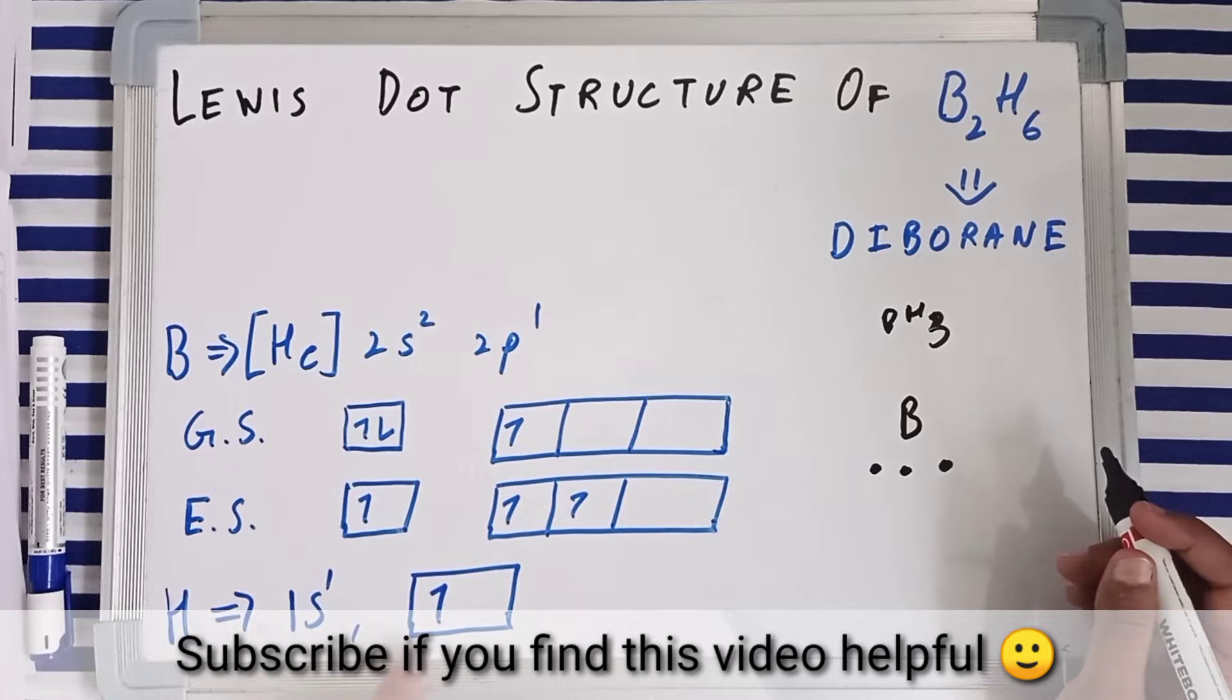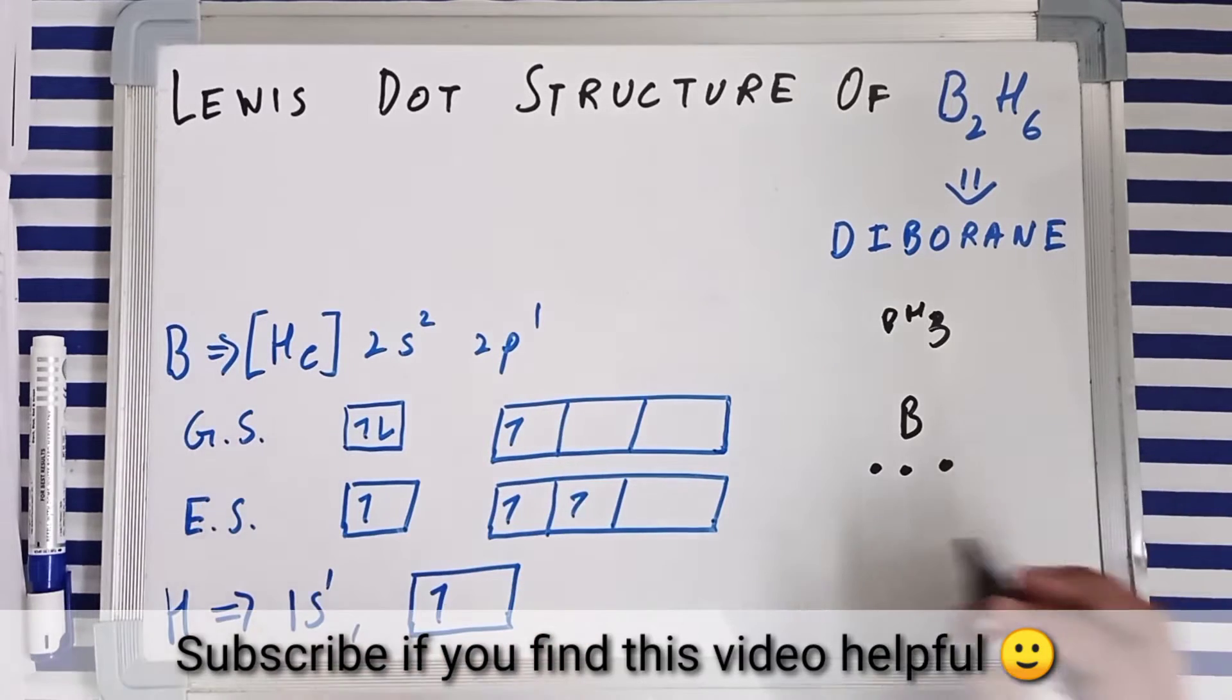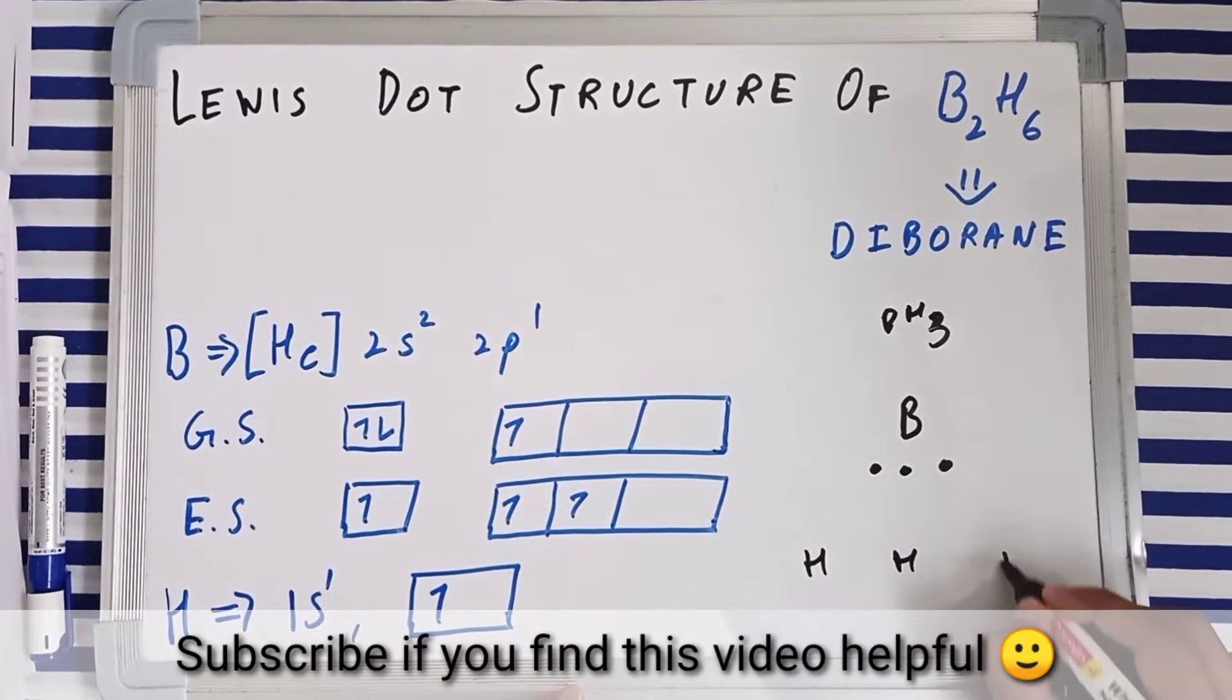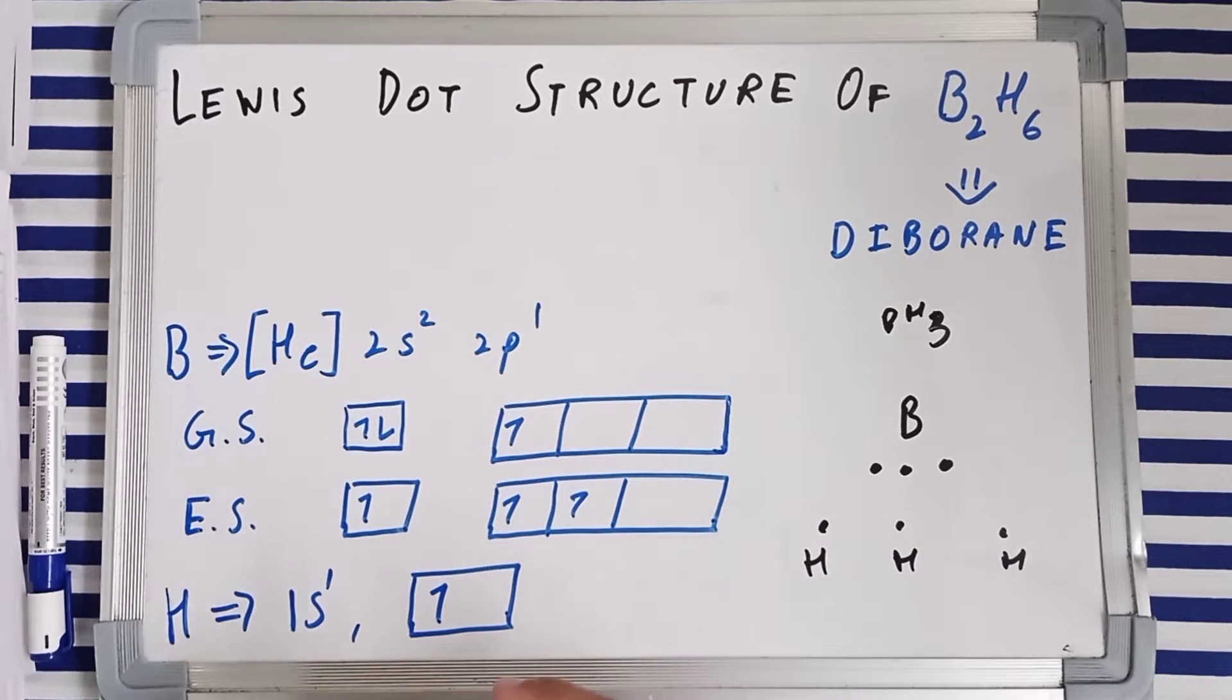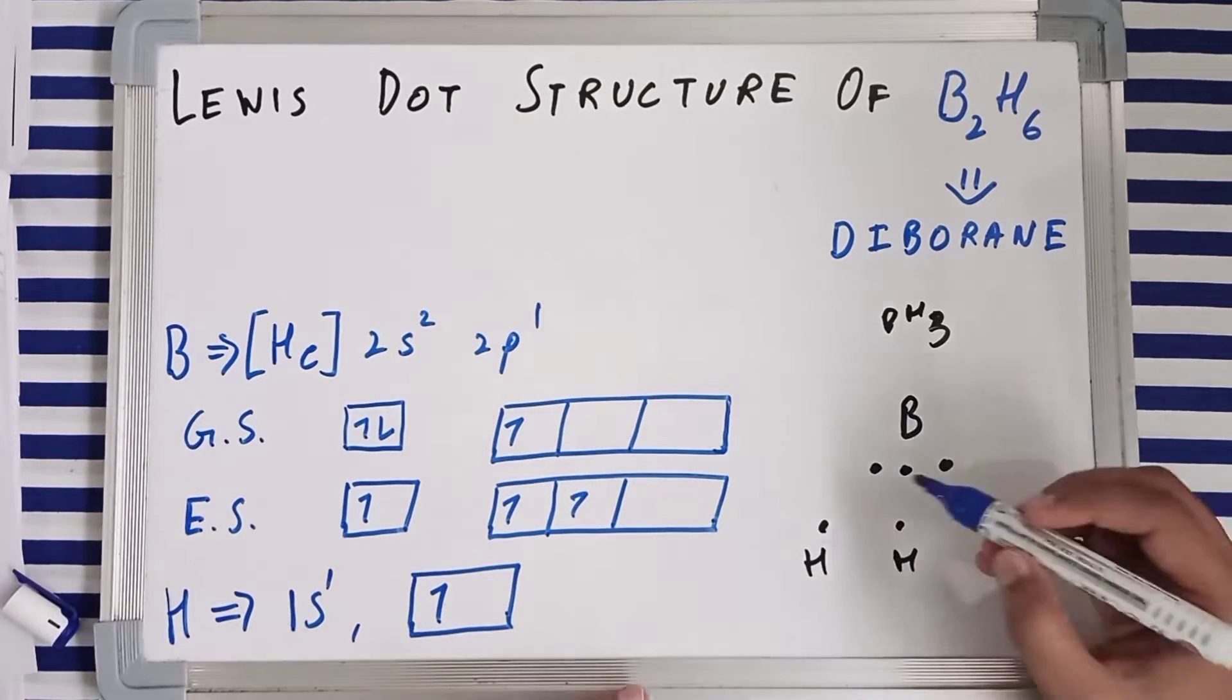Three hydrogen atoms and they all have single valence electrons. So you have got one, two, three. And they are going to make single bonds with each other, with boron.